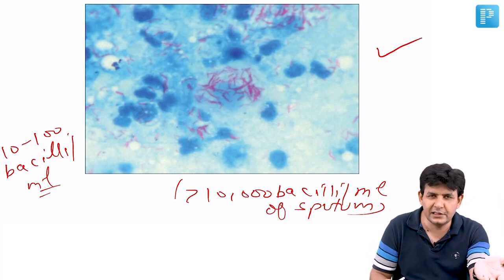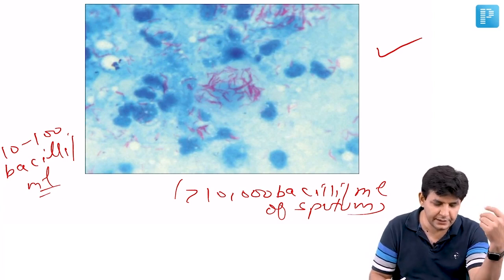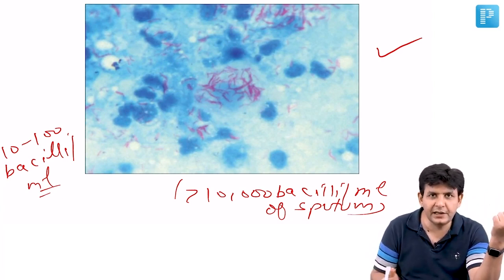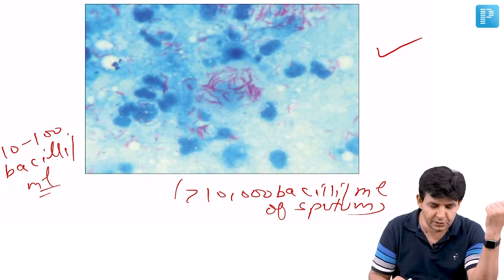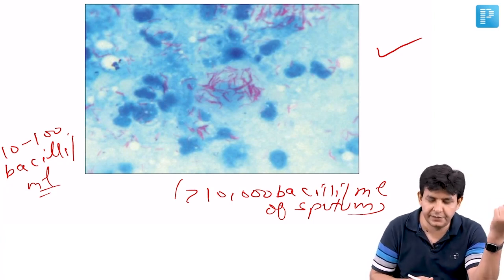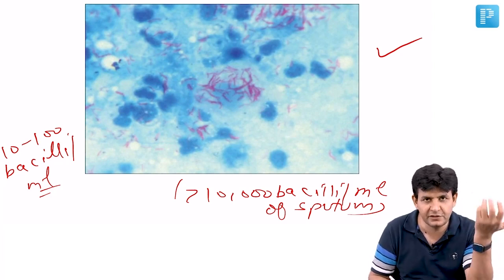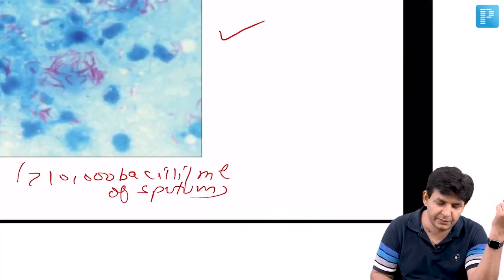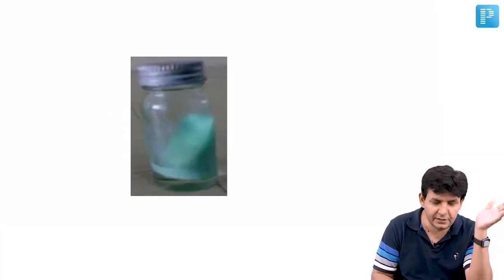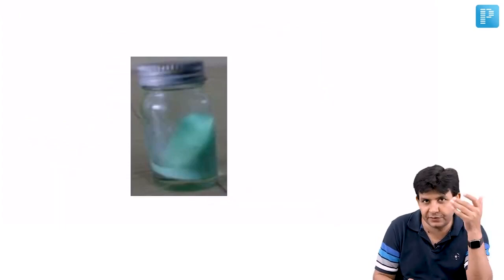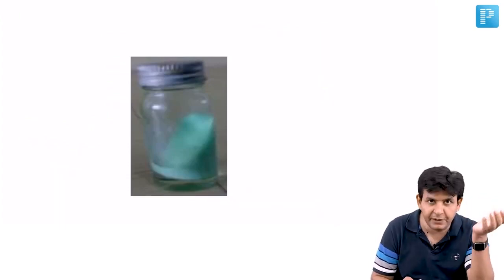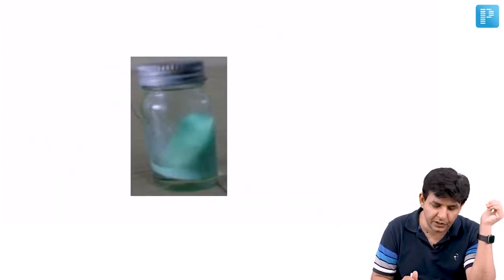This has been asked in UPSC Medical CMS exams and can come in your exam too: how many bacilli per ml for culture? — 10 to 100. How many to be seen on ZN staining? — more than 10,000. What is the modified ZN staining method? — the Kinyoun method.